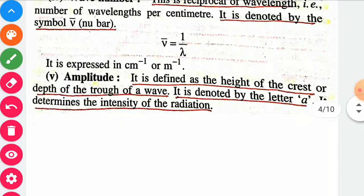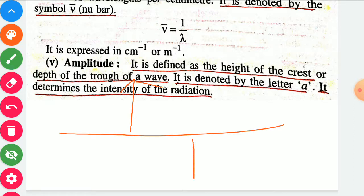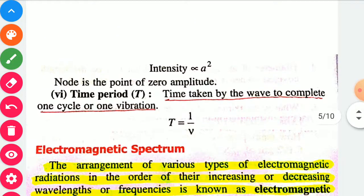Next point is amplitude. The maximum distance in the upward direction towards the crest, or in the downward direction towards the trough, from the zero line (the origin line), is known as amplitude. It is defined as the height of the crest or depth of the trough of a wave. Amplitude is denoted by small 'a' and it determines the intensity of radiation. Intensity is directly proportional to the square of amplitude.